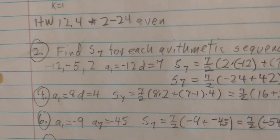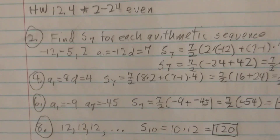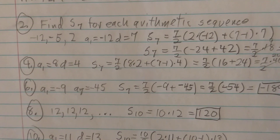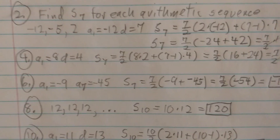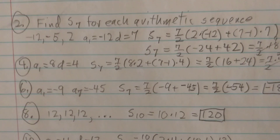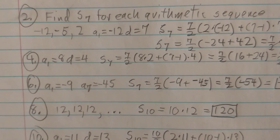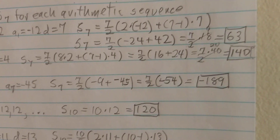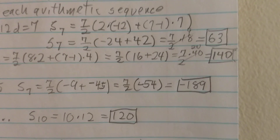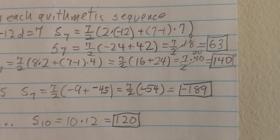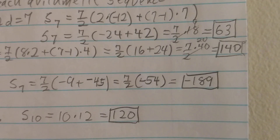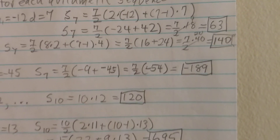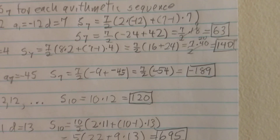For homework, starting at problem 2: find S sub 7 for each arithmetic sequence. For negative 12, negative 5, 2 — you can see the common difference d is 7. So a1 is negative 12, d is 7, and S sub 7 is 7 over 2 times 2 times negative 12 plus 7 minus 1 times 7, which is 7 over 2 times negative 24 plus 42. That simplifies to 7 over 2 times 18, and since 18 over 2 is 9, 7 times 9 gives us 63.